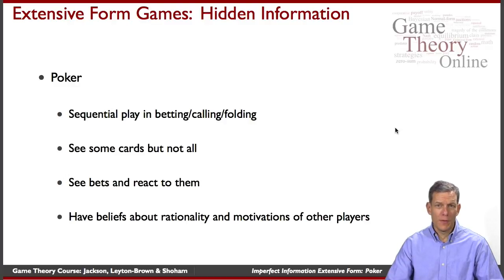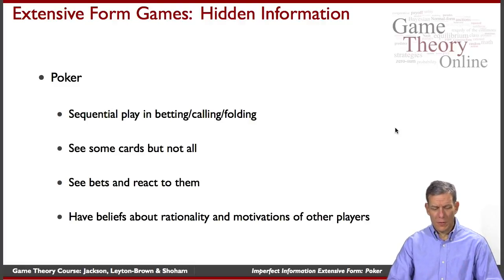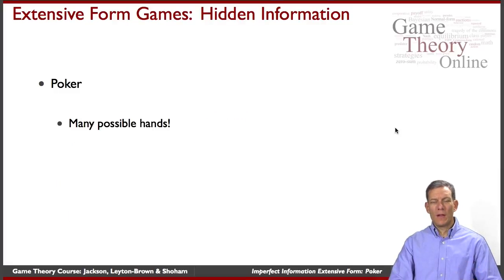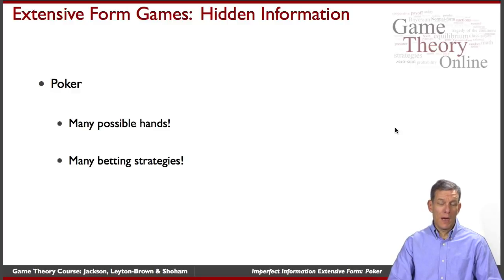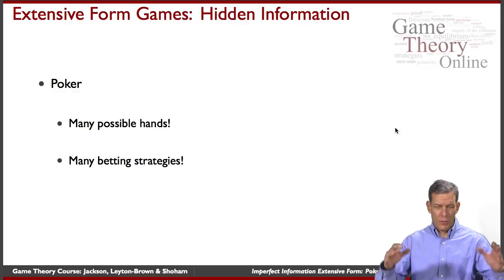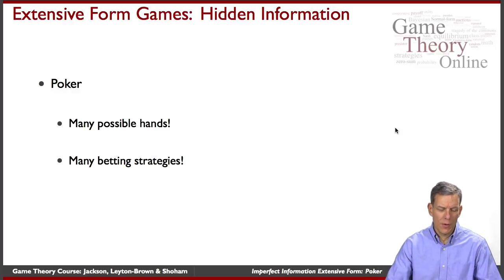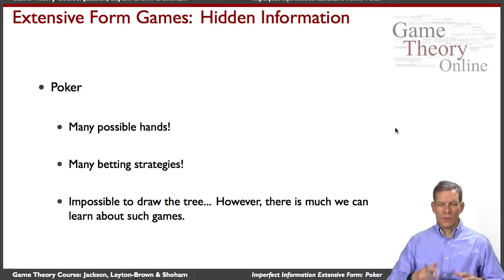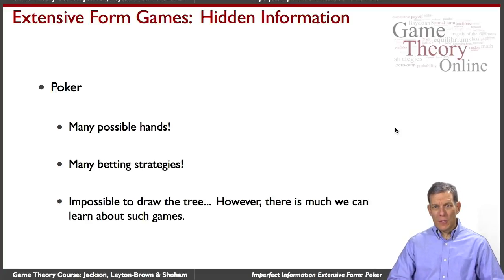That involves having beliefs about the motivations, the rationality of other players, what their payoffs are, what their potential payoffs are, which in poker might come from the cards. When we think about these kinds of games, there are many possible hands, making poker a fairly complicated game to keep track of. There are many betting strategies, which means the overall tree we're going to have to work with will be quite complicated — almost impossible to draw out on the screen. Nonetheless, there's a lot we can learn about analyzing such games and the types of strategies they have.